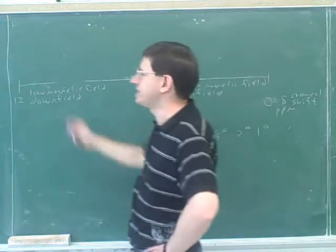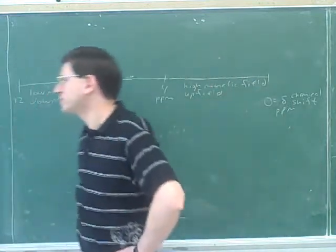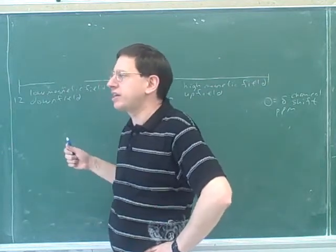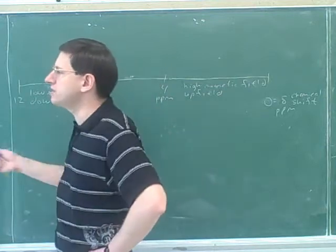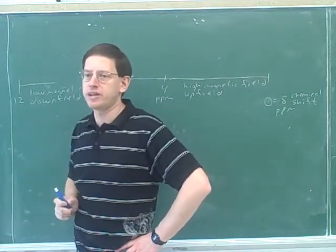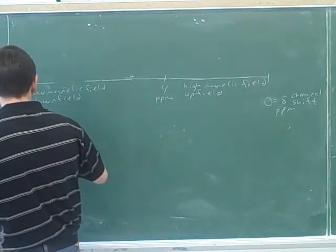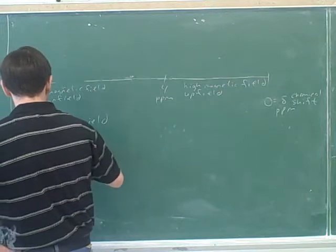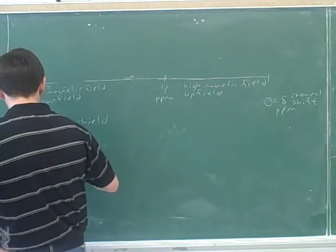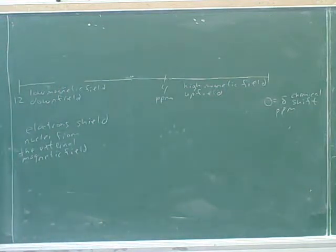Substitution pulls the hydrogens somewhat downfield — that's not a very big effect, but it is an effect. Now here's a more important effect. Remember how we get the absorptions: we start with a low magnetic field and increase it until it's big enough for an absorption to occur. All of these nuclei are surrounded by electrons in the molecule, and it turns out that electrons shield nuclei from the external magnetic field.